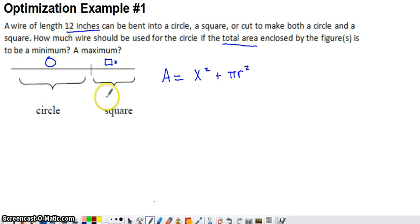What you can use to achieve that goal is this: You only have so much wire to use. You have 12 inches of wire that you're going to use and you're going to use all 12 inches to either make the circle, make the square, or cut it to make both.